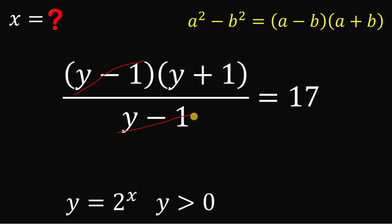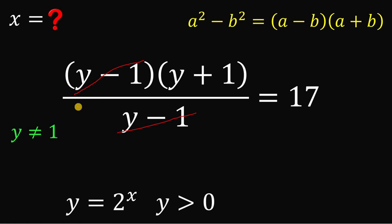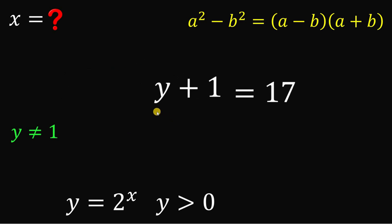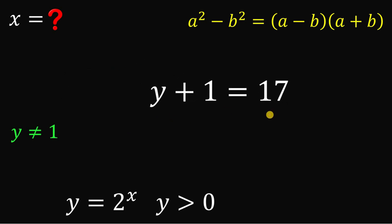Before we cancel y minus 1 from the numerator and denominator, let's assume that y is not equal to 1, because if y equals 1 then y minus 1 equals 0, which we want to avoid. With that assumption, we can cancel y minus 1, leaving us with y plus 1 equals 17. We can now solve for x by replacing y with 2 raised to the power of x.